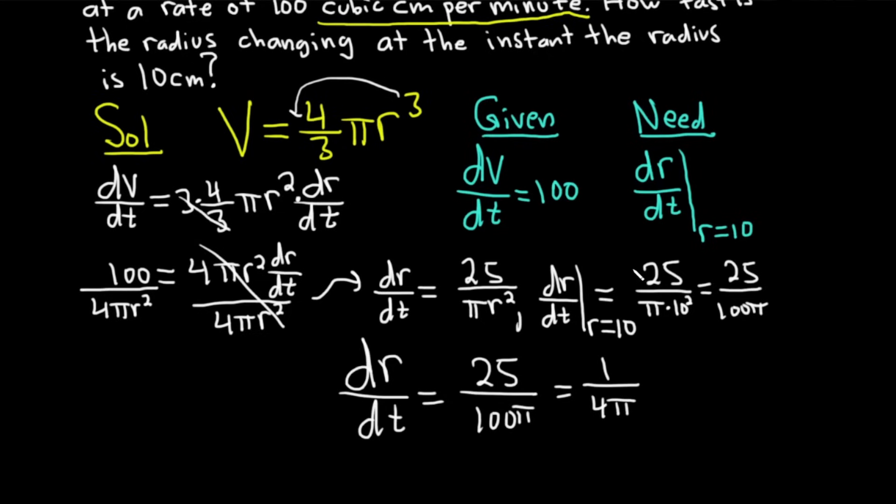And the units here, well, they were centimeters. And this is the rate of change of radius. So it's just centimeters. And the units of time were minutes. And so that would be the rate of change of the radius at the instant in time that the radius is 10 centimeters.